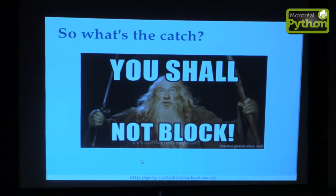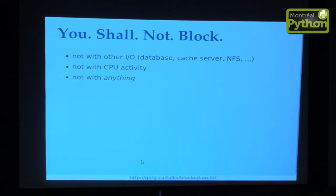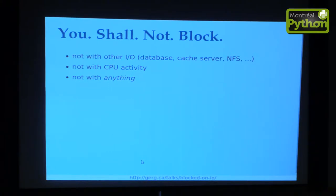Everybody wants to handle more concurrent clients. But there's a catch: you shall not block. The way this is always explained in the documentation for any of these frameworks is that you shall not block with other I/O — you're not allowed to make database queries, hit your cache server, and you have to be careful even about opening local files, because a local file might be on NFS. But something they don't mention in the documentation, which they should, is that you shall not block with CPU activity. Anything a computer does that isn't I/O is CPU activity. If you're adding three integers and appending the result to a list, that's not that much — but when you do a lot of CPU activity, it blocks the event loop and bad stuff happens.